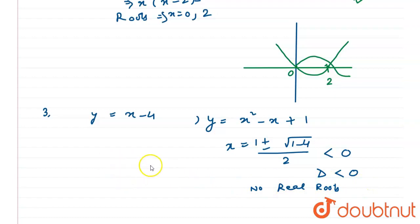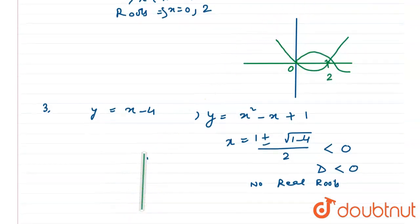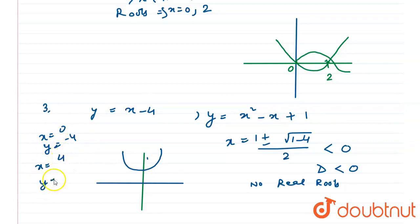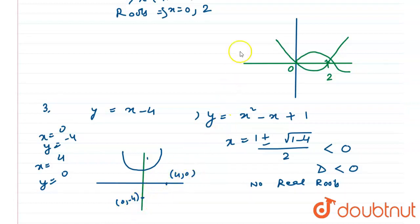Since d < 0, there are no real roots. Checking the graph: y = x² - x + 1 is a parabola that doesn't cross the x-axis. For y = x - 4, when x = 0, y = -4, and when x = 4, y = 0. So the straight line passes through (0, -4) and (4, 0). We can see the graphs are not intersecting — the third part does not intersect.